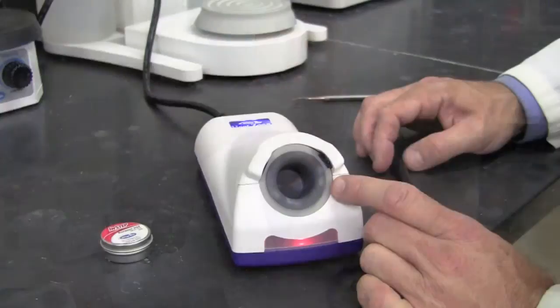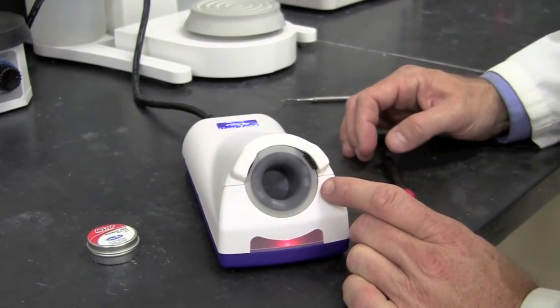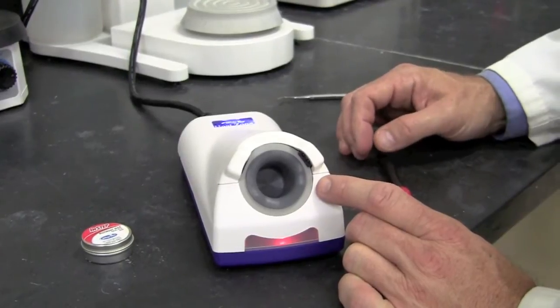Occasionally when the unit is first turned on, the light might not show solid green. It might flicker red to green or show a solid red. As you can see this unit is flickering green to red without an instrument being inserted, which means it will require some adjustment.